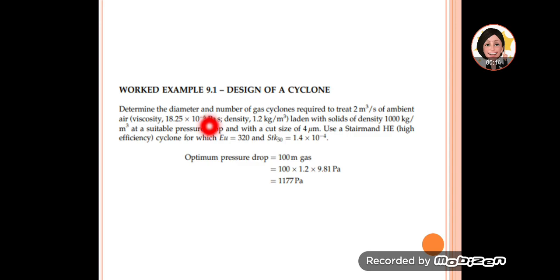In this question, we need to determine the diameter and number of gas cyclones required to treat this amount of ambient air with these characteristics: viscosity, density, and solid density at a suitable pressure drop. For this question, the pressure drop is given in terms of 100 meter height.